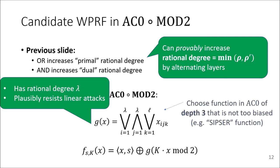And this candidate now has high rational degree by the considerations before, because we have the AND and the OR of sufficiently high fan-in, so the two outer layers. And further, it again plausibly resists linear attacks based on a combinatorial conjecture.